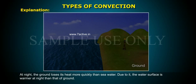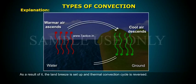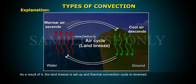At night, the ground loses its heat more quickly than sea water. Due to it, the water surface is warmer at night than that of ground. As a result of it, the land breeze is set up and the thermal convection cycle is reversed.